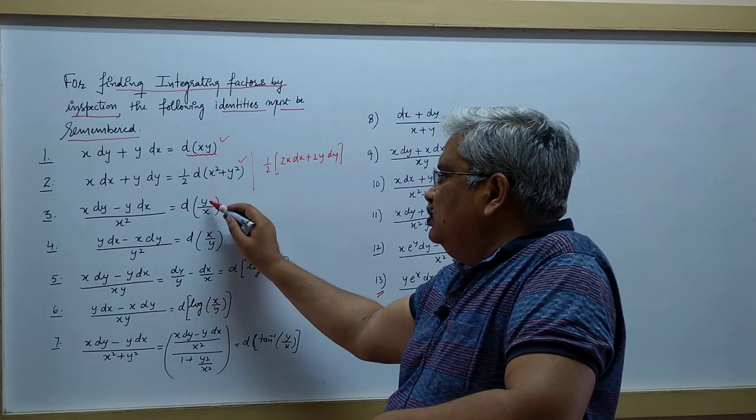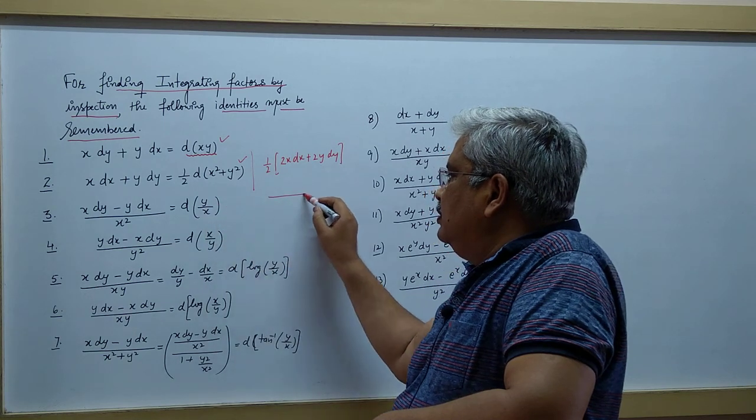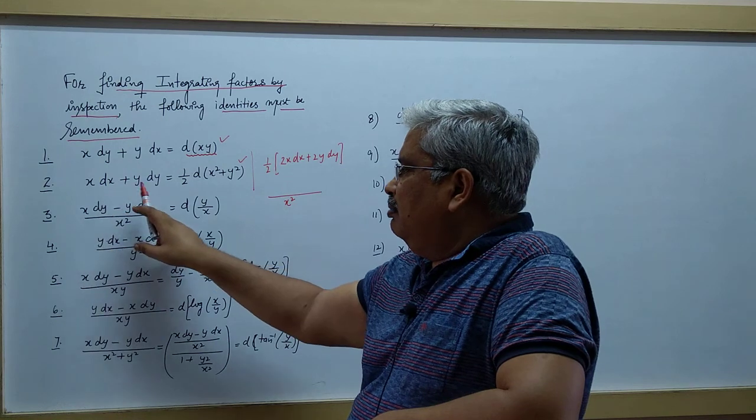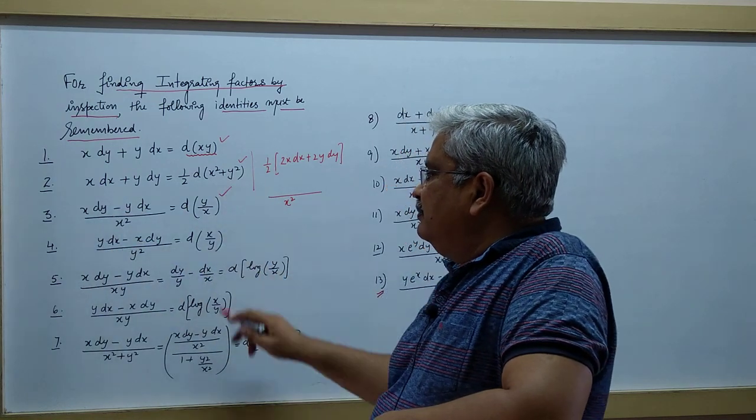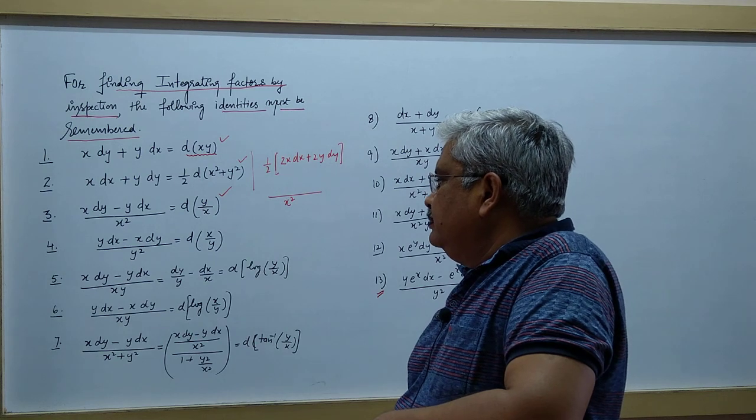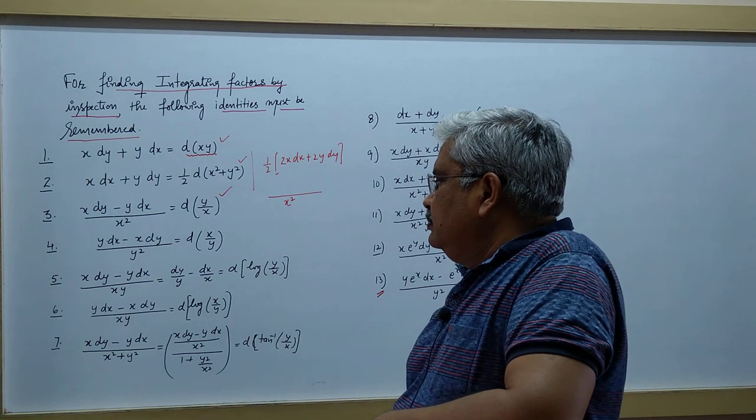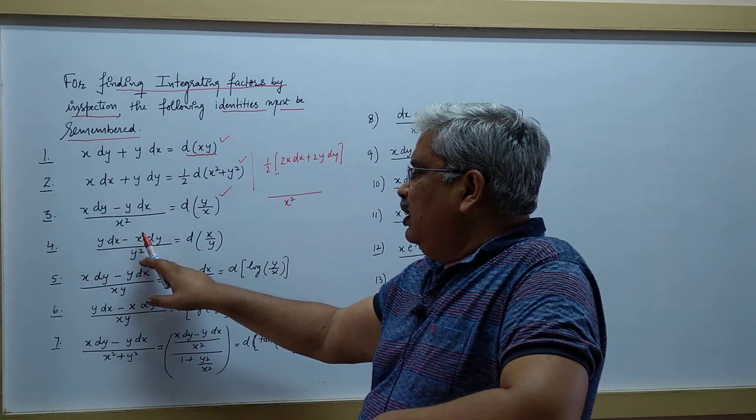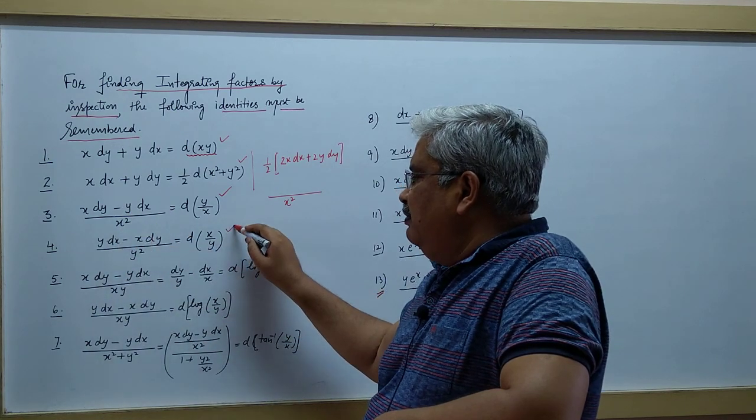If you apply the quotient rule d(y/x), you know that this is x into dy minus y into dx divided by x². The question becomes very simple. And if you say y into dx minus x into dy upon y square, it is derivative of x/y.